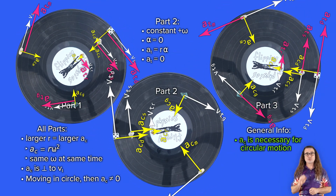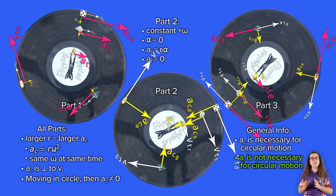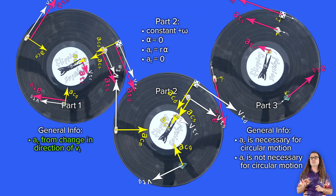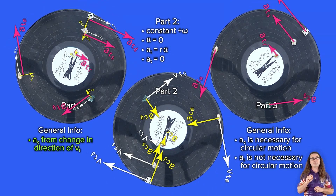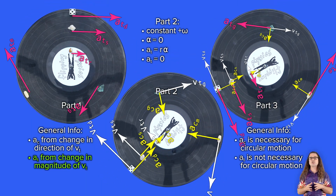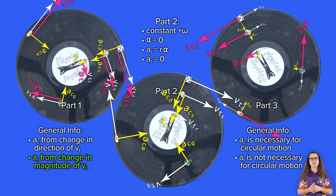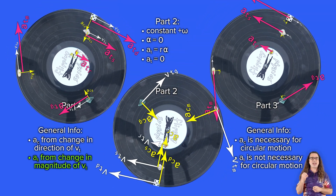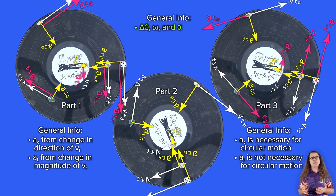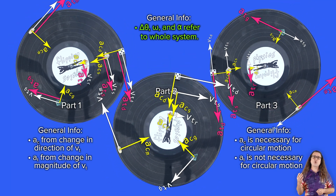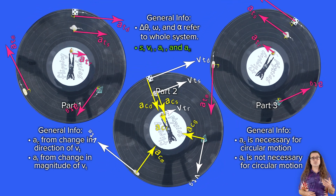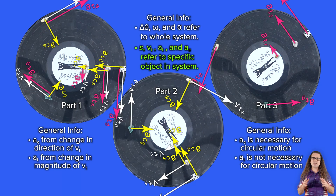Centripetal acceleration is necessary for circular motion; however, tangential acceleration only exists when the object is angularly accelerating. This is because centripetal acceleration results from the change in the direction of the object's tangential velocity, which is always changing when an object moves in a circle. However, tangential acceleration results from the change in the magnitude of the object's tangential velocity, which is only changing when an object has an angular acceleration. Lastly, notice that the angular terms — angular displacement, angular velocity, and angular acceleration — all refer to the whole system. However, the linear terms — arc length, tangential velocity, tangential acceleration, and centripetal acceleration — are all specific to a specific object in the system.